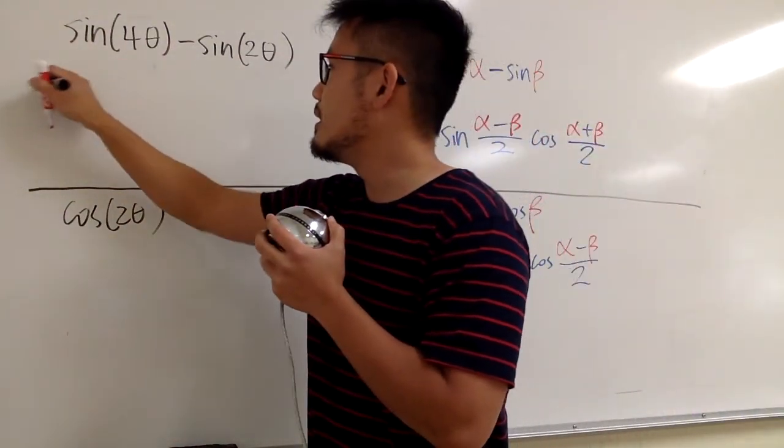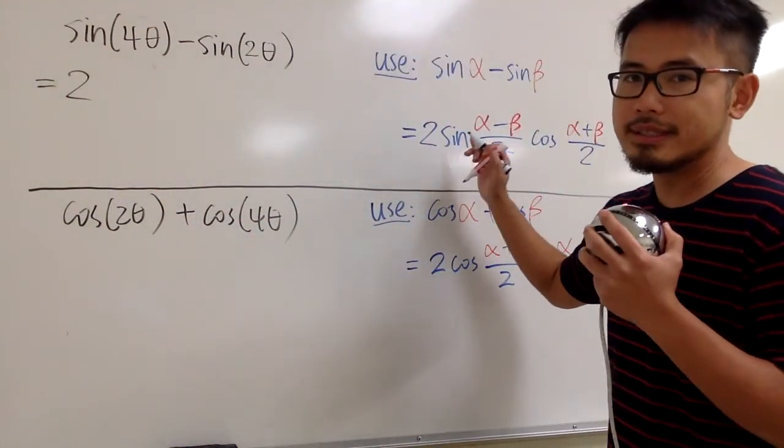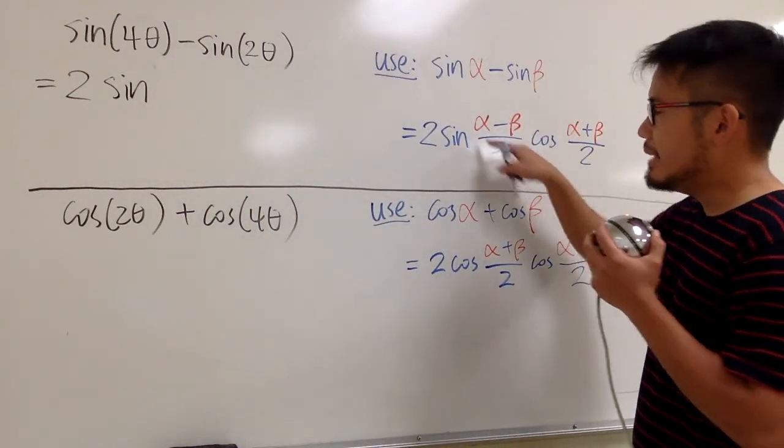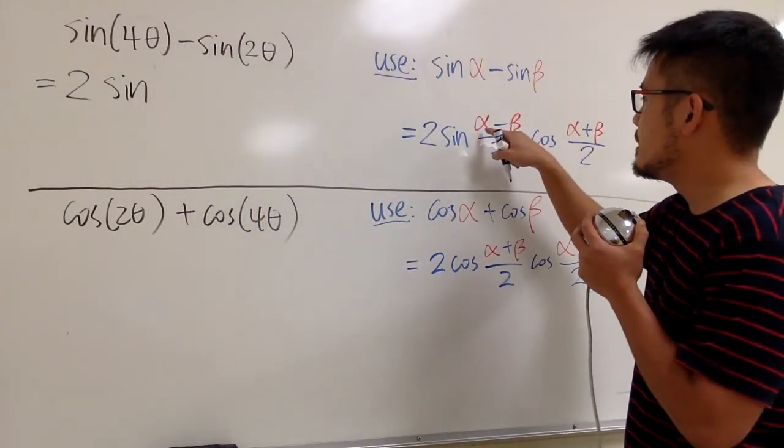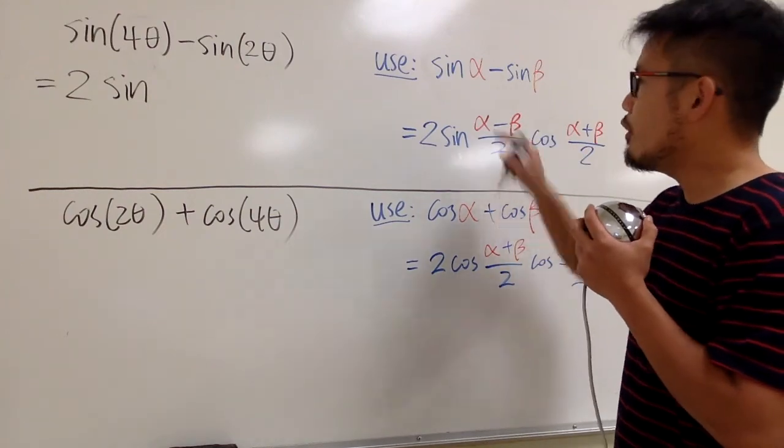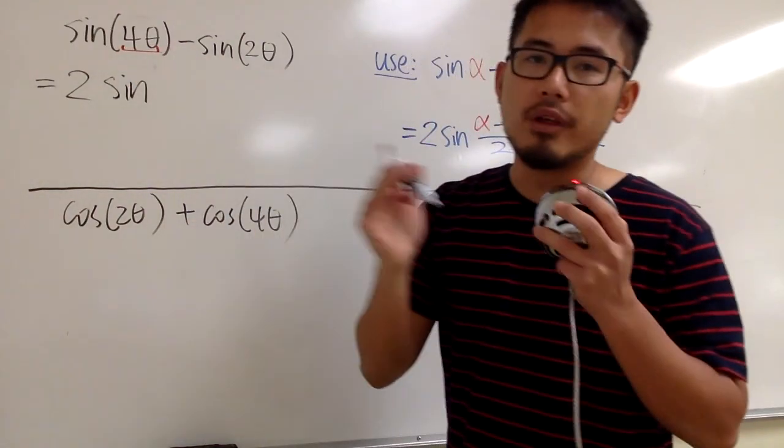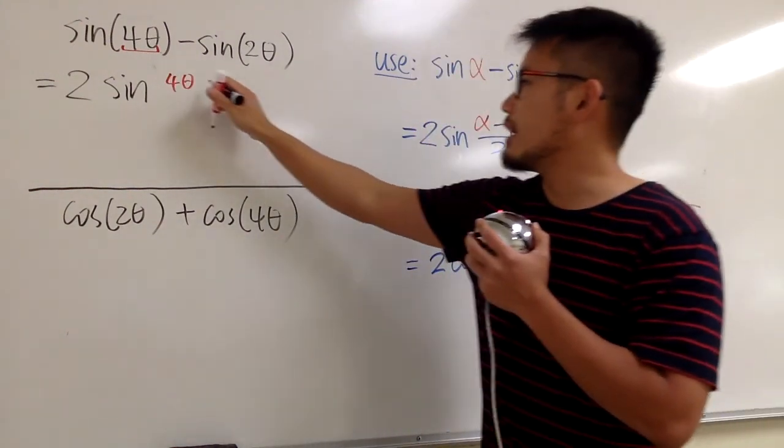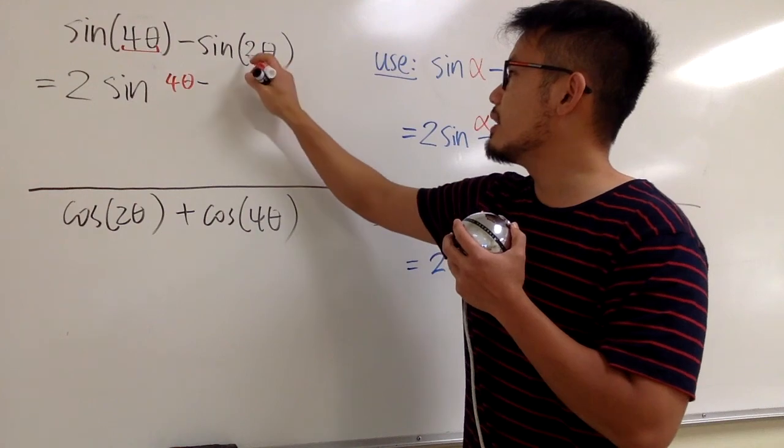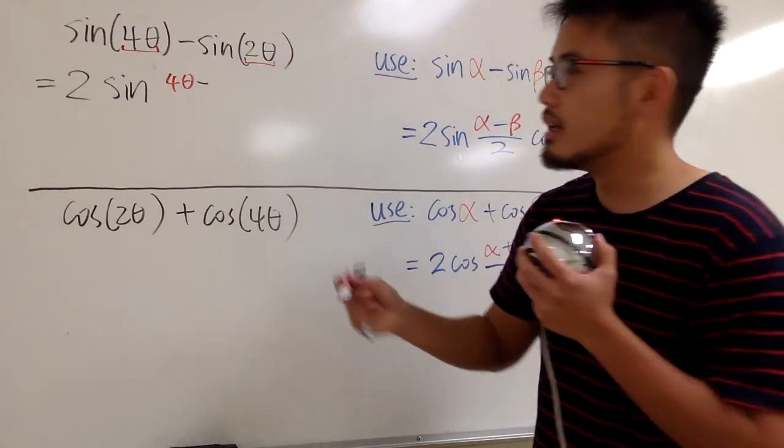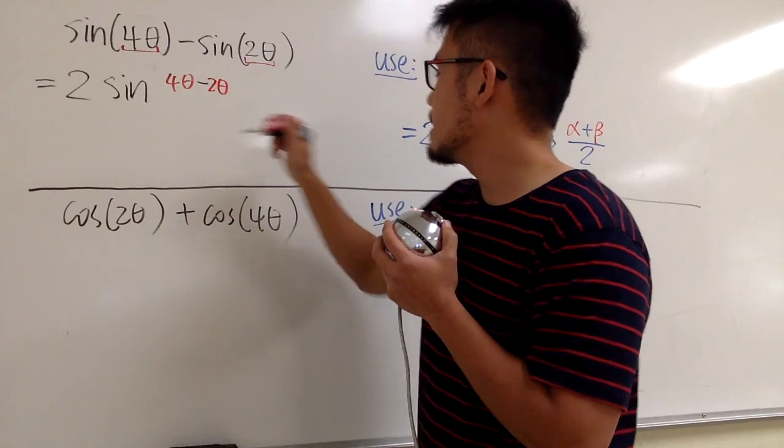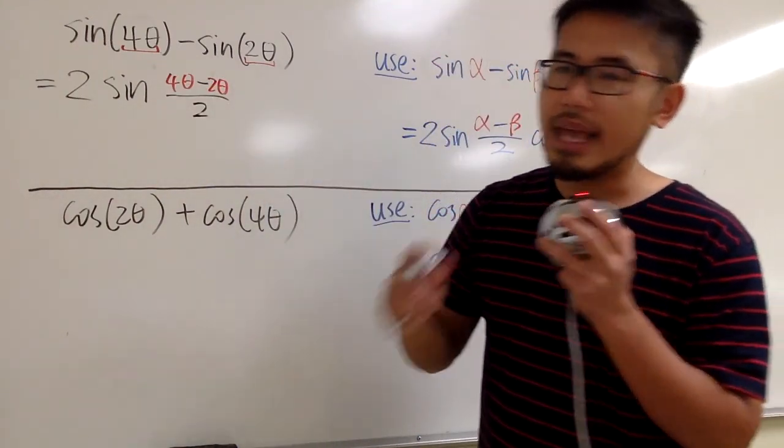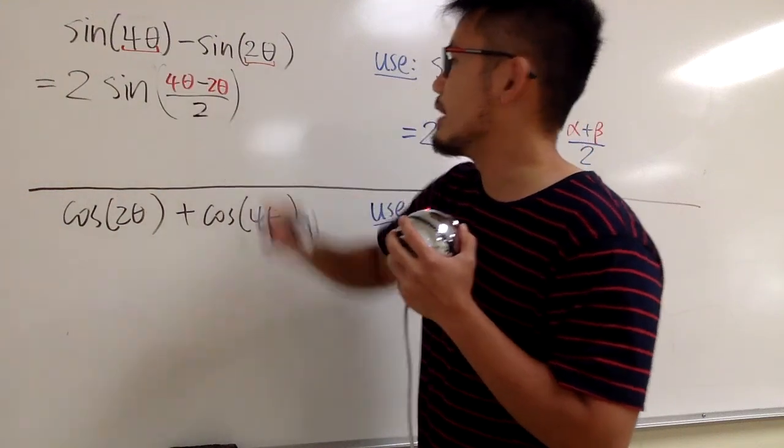We know this is going to be two times the first part, which is going to be sine. And then for the input here, which is going to be alpha minus beta, alpha is the first angle, which is 4 theta. So we put that down, 4 theta, and then we subtract the second angle. So we minus the second angle, which is 2 theta. So we have 4 theta minus 2 theta, and then be sure to divide it by 2. This is technically the first angle for the sine, and I'll put that in parentheses.